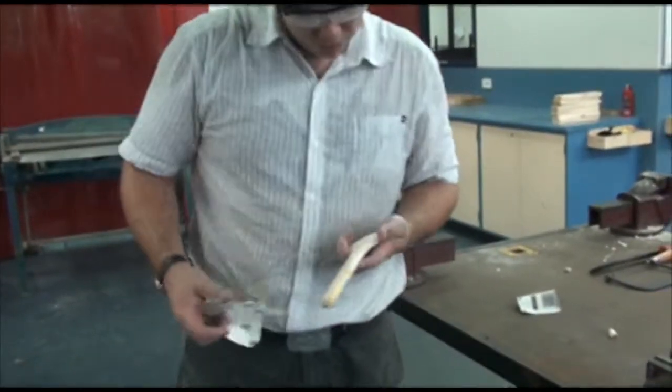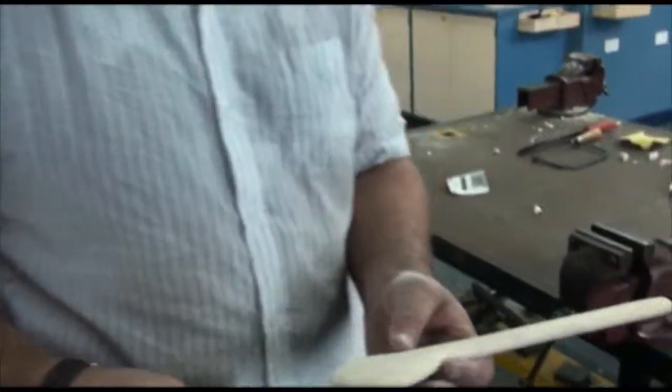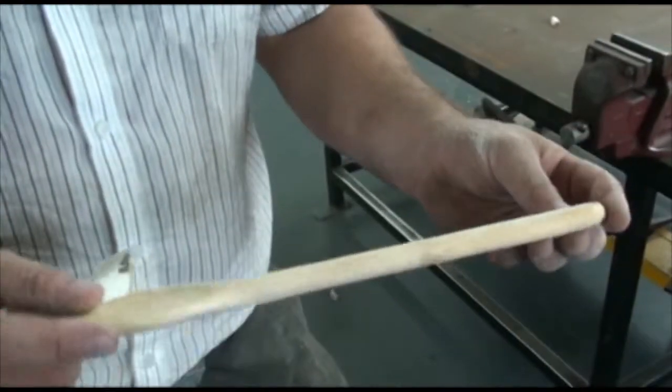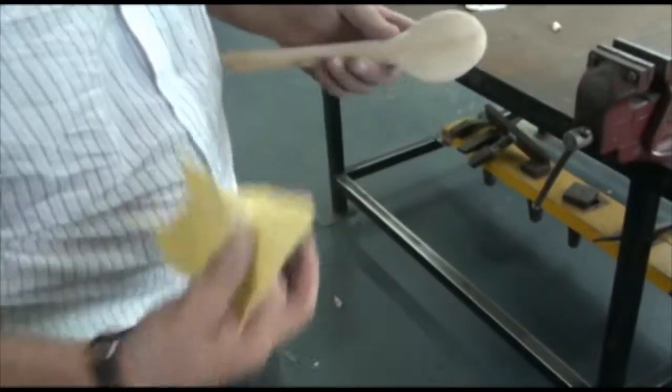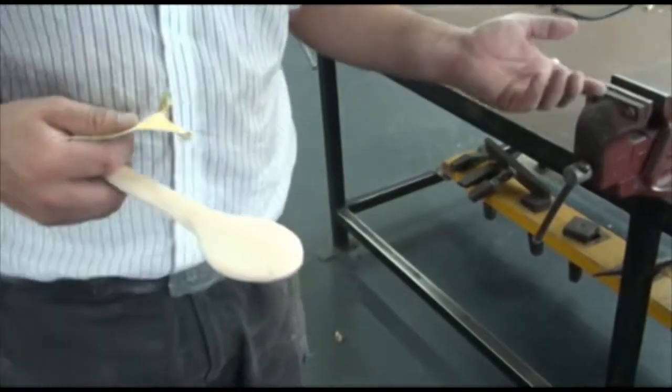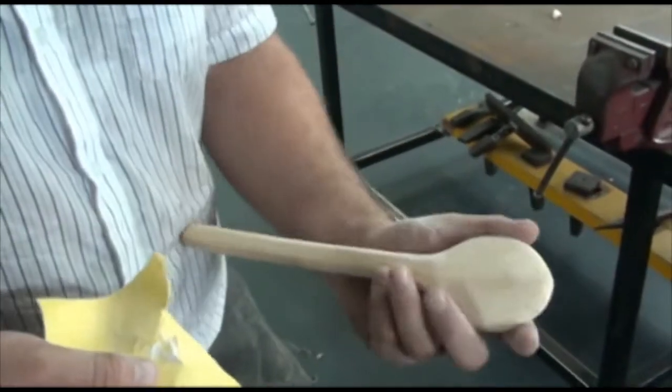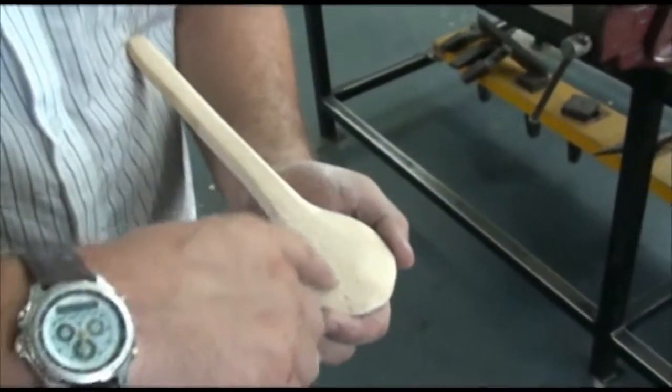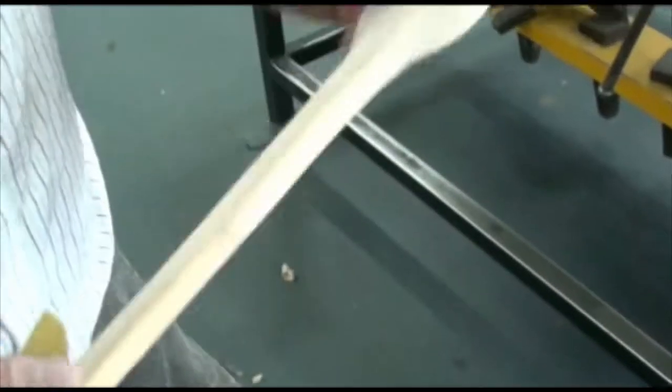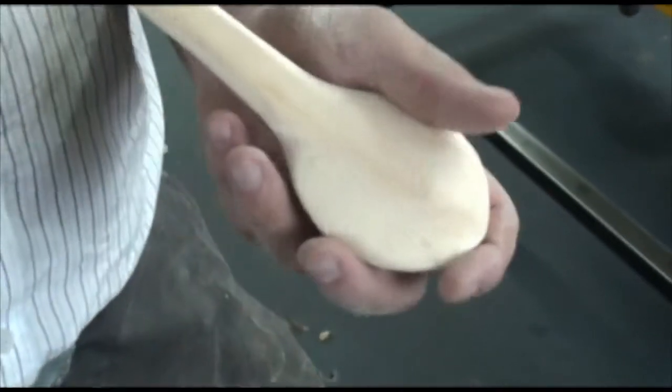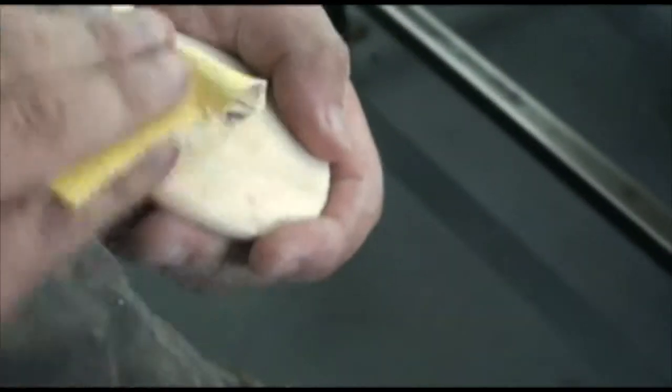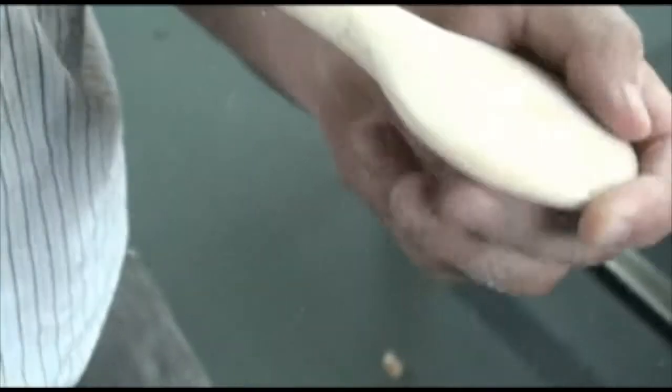Now, that's not quite done enough, but you can see that's starting to become a lot smoother all over. The decision to go onto your smooth sandpaper should only be done when you can't see any saw marks, when you can't see any marks from the rasp anymore. Keep using this rough sandpaper until all of these marks are gone.